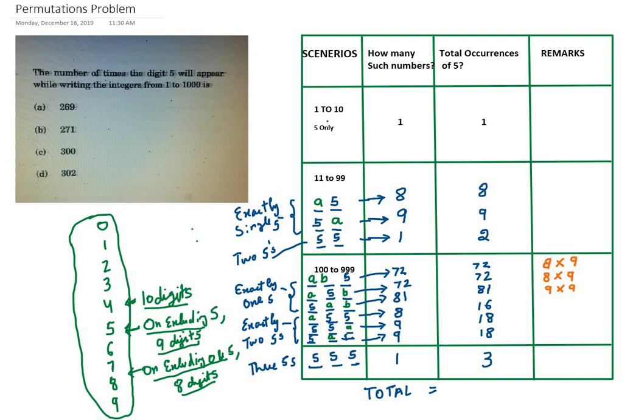Hello everybody, this is a new question being asked on the forum. The number of times the digit 5 will appear while writing the integers from 1 to 1000. I have created a solution as you can see in the diagram. We have to break down into different scenarios. We have to go from 1 to 1000, so we'll break it down into simpler cases so that it is easier to find the total occurrences of 5.